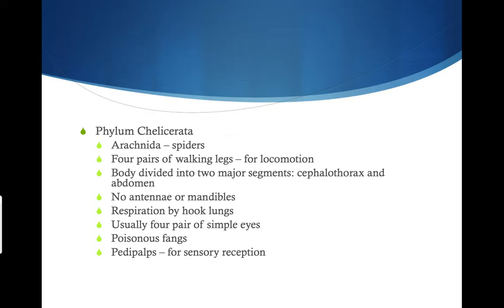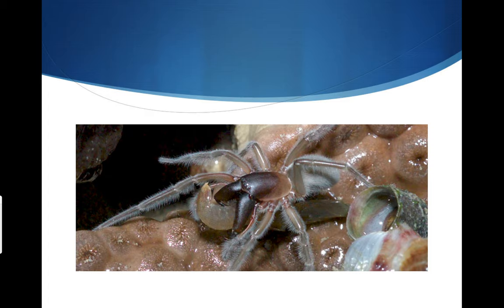Spiders obtain their oxygen through what are known as book lungs. Different organisms have different ways of respiring — birds have air sacs, while spiders have book lungs, a different organ that allows them to obtain oxygen. They usually have four pairs of simple eyes, poisonous fangs — which is what makes spiders dangerous — and they also have pedipalps, which are their way of sensing around.